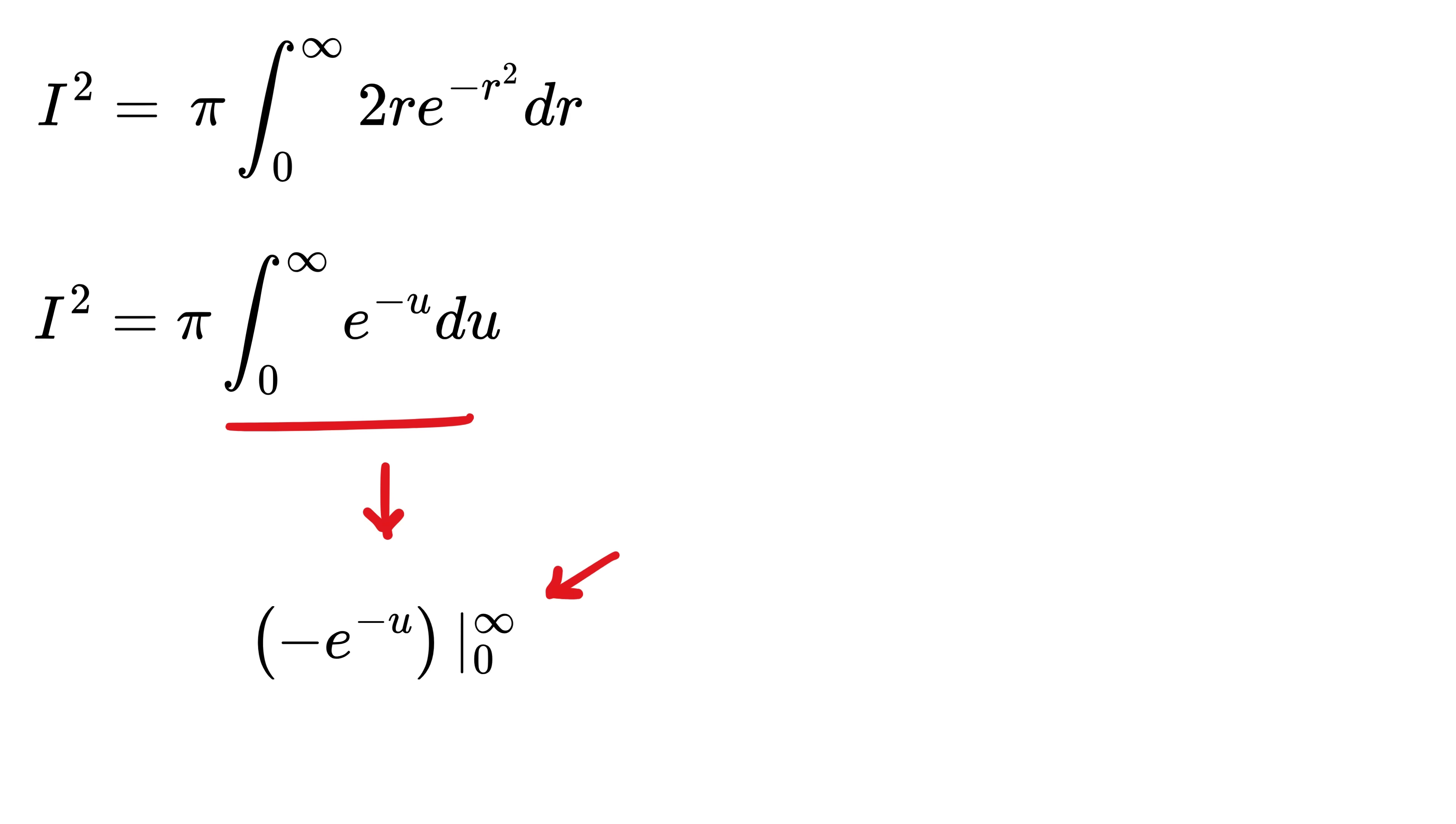Remove the minus sign, and it will be zero here and infinity here. So we get e raised to minus zero minus e raised to minus infinity. This is one, and this is one over e to the infinity, which is one over infinity or zero. So this is one, and multiplied by pi gives this as pi. So we have I squared equals pi, and thus we get I as square root of pi, and that's it.